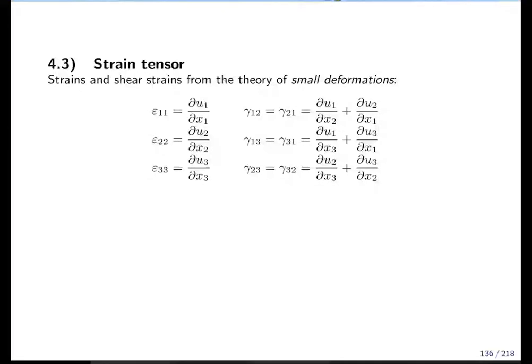So I continue with section 4.3. Section 4.1 was change of length as described by the diagonal elements. Section 4.2 was change of angle, change of orientation of two vectors relative to each other.